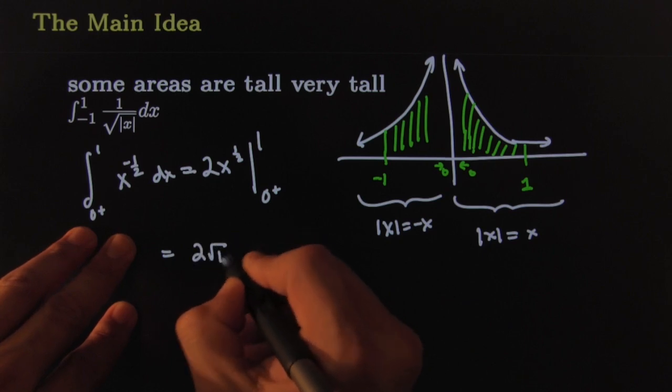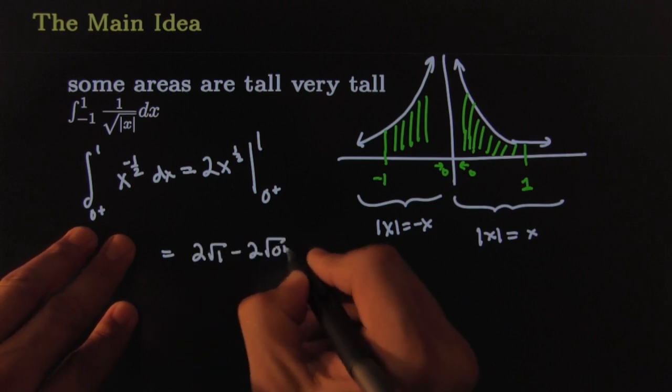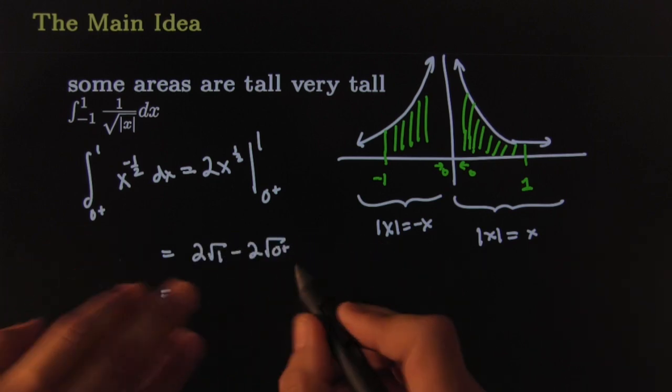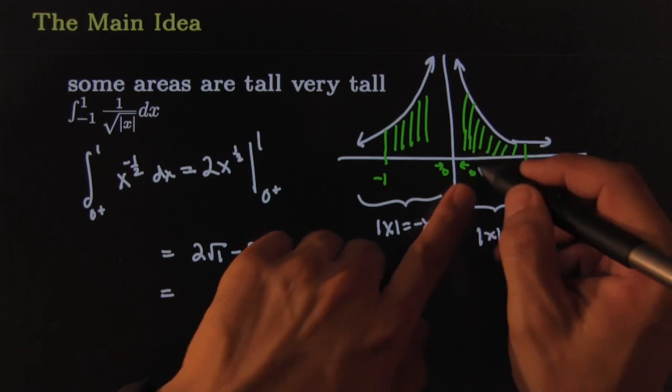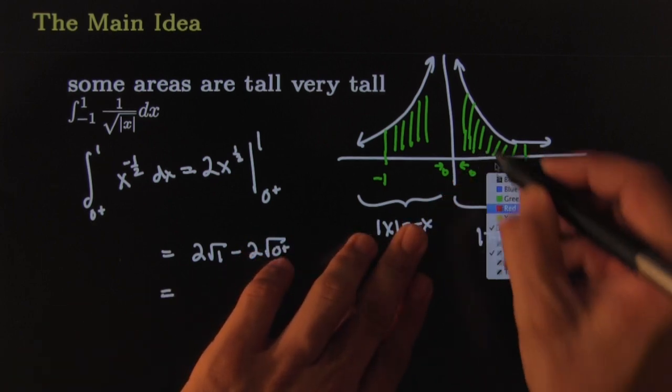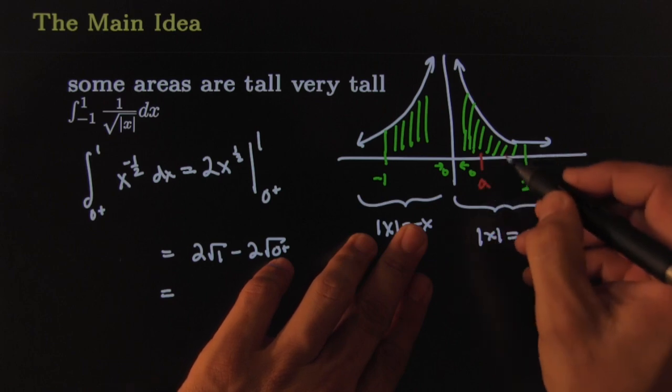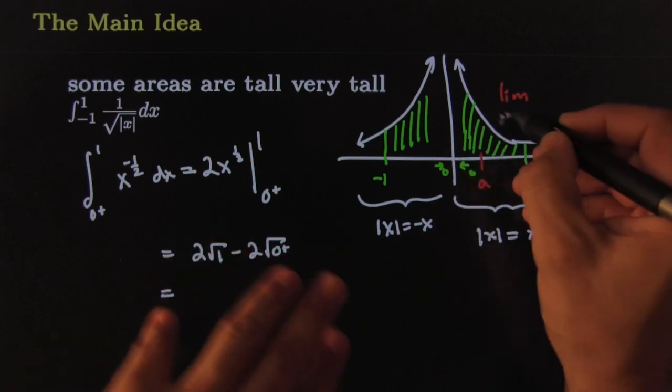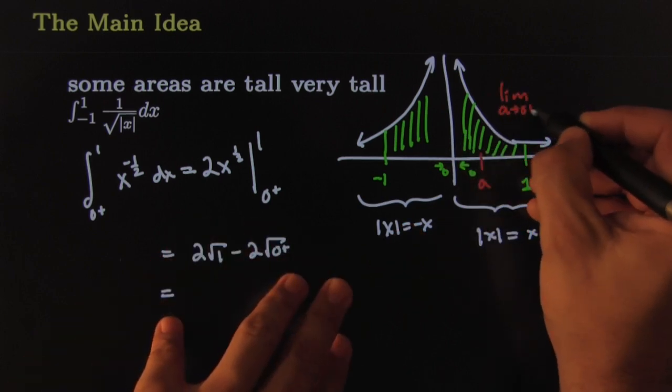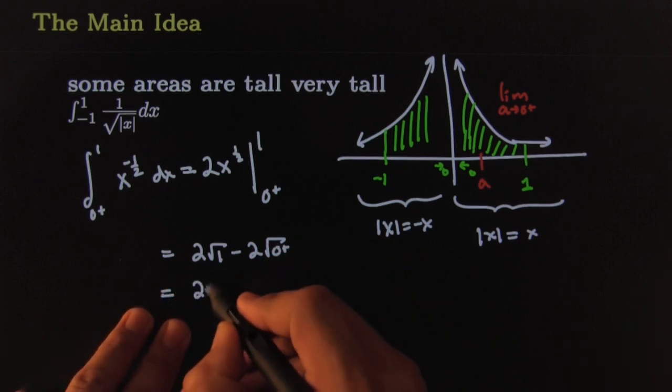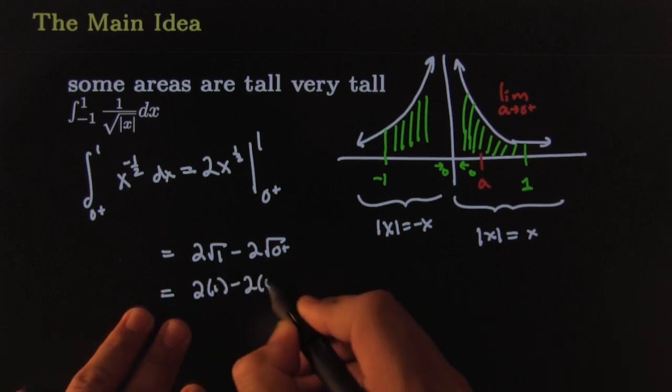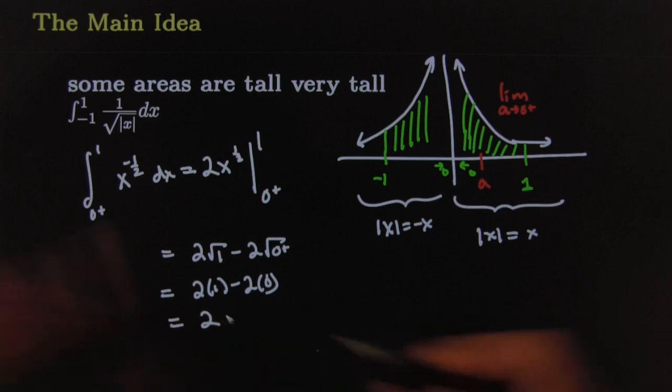So that would give you 2 times the square root of 1 minus 2 times the square root of 0 from the positive side. Again, if I had drawn something really really complicated, I would have had to use my limit notation. I would have had to say, wait a minute, I gotta stop here at a and then take the limit of whatever my answer is as a goes to 0 from the right. But this one's really harmless. I can just evaluate it. Now this becomes 2 times 1 minus 2 times 0, which is a grand total of 2.